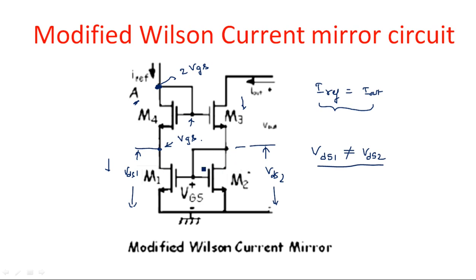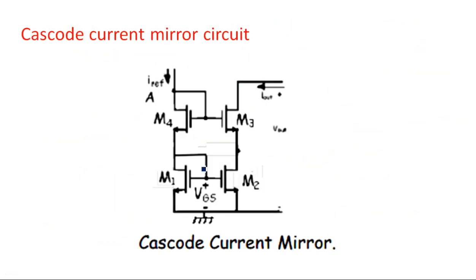To improve the output impedance, we go to the cascode current mirror circuit, where the same set of network has been repeated on the bottom side. In the upper side, whatever configuration we have, the bottom side also has the same set. That is why it is called cascode — cascode means the same set is repeated with a different configuration.